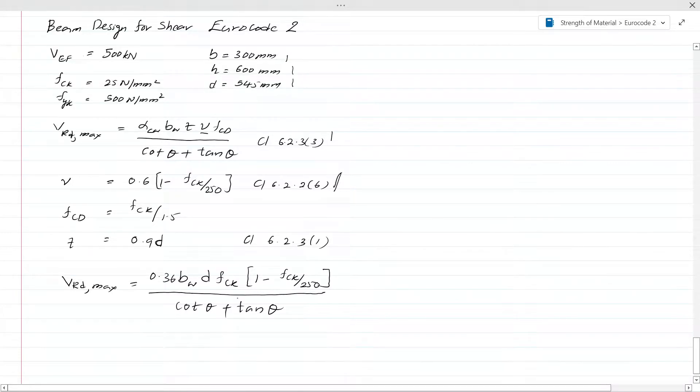Let's first calculate the maximum shear force. For this calculation we consider the angle as 22 degrees, which gives the maximum shear force. So we are going to check VRd,max equals 0.36 into b_w, width of the beam that is 300, and d effective depth.